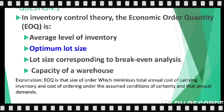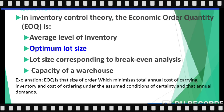The answer is: Economic Order Quantity is the optimum lot size. Economic order quantity is that size of order which minimizes the total annual cost of carrying inventory and the cost of ordering, under assumed conditions of certainty and fixed annual demand. So EOQ is nothing but the optimum lot size — the quantity we must order to optimize both costs.